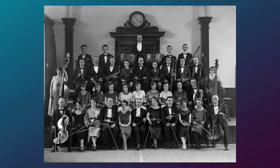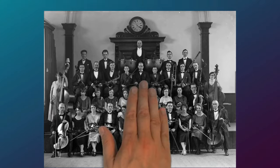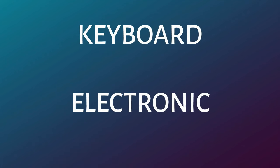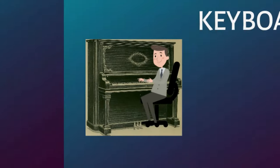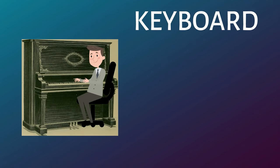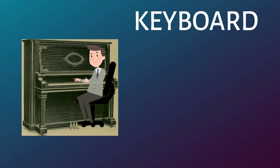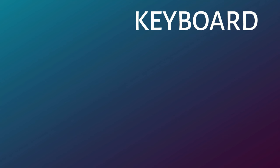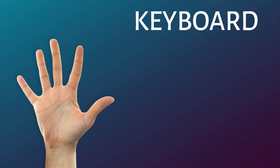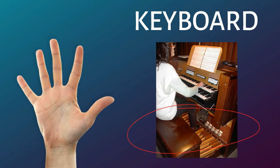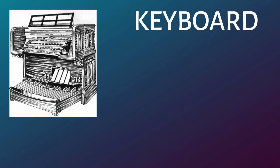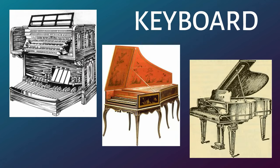There are even families of instruments outside those found in the orchestra. These include keyboard and electronic instruments. Keyboard instruments sometimes play with orchestras and orchestral instruments, but they are really designed to be solo instruments. They produce sound different ways, but always through a keyboard played with the hands, or even sometimes with the feet. They include the organ, harpsichord, and piano.